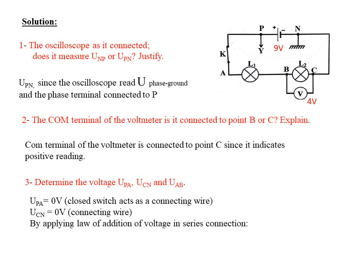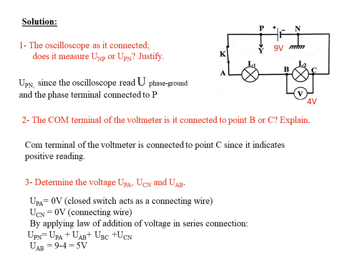To find the voltage U_ab across lamp L1, we use the law of addition of voltage in series connection: U_pn = U_pa + U_ab + U_bc + U_cn. Solving this gives U_L1 = U_ab = 5 volts.